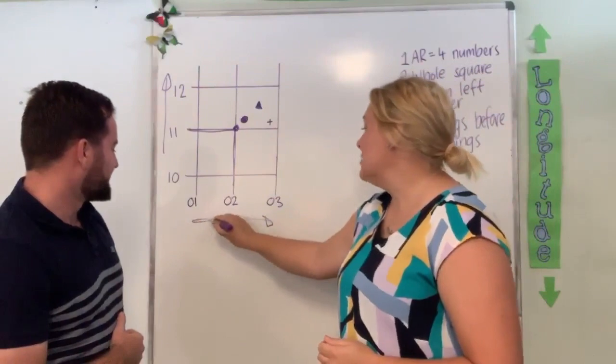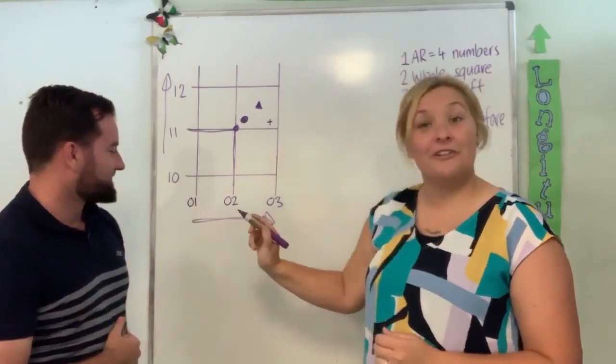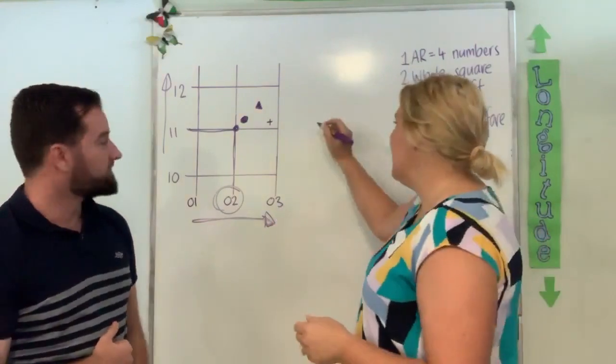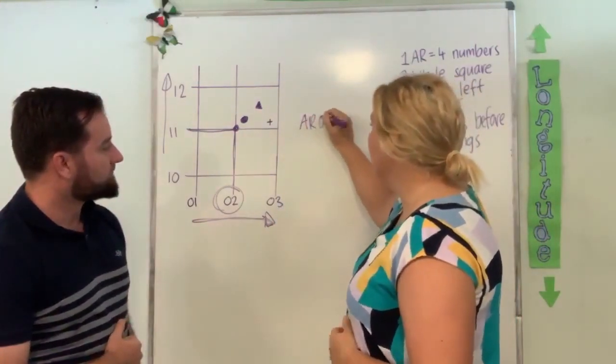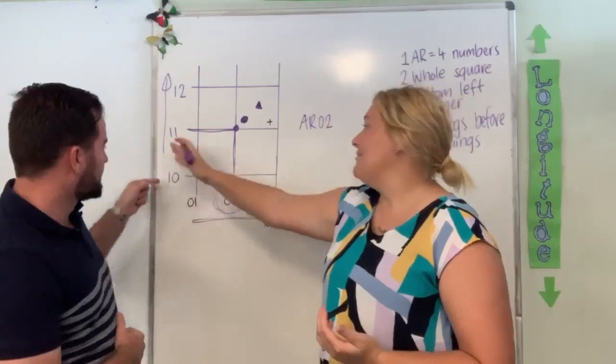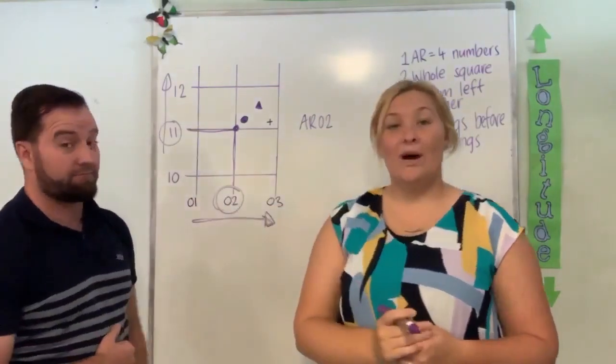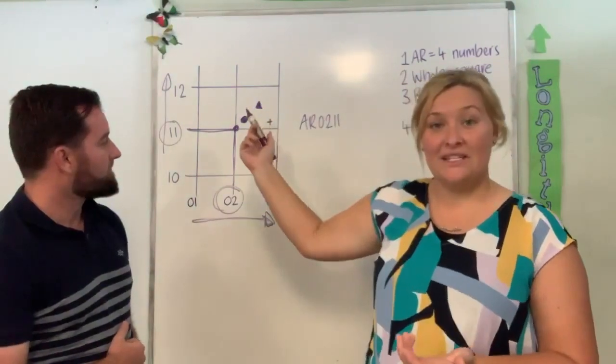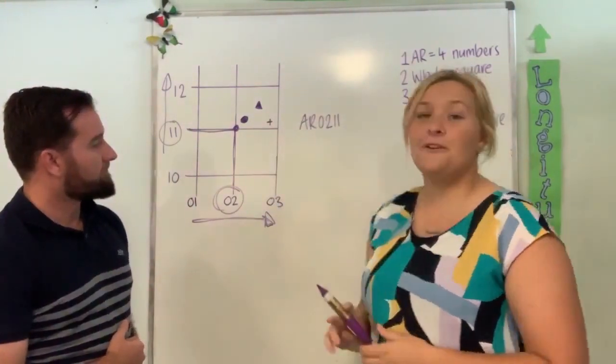This one here, we're going to go across our eastings first. We're going to run across the field and we get 02. So the first two numbers that we go down in our area reference is going to be 02. Then we're going to climb the tree until we get to 11. And that's going to come next. So our area reference for all three of these things is going to be AR 0211.